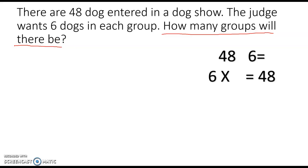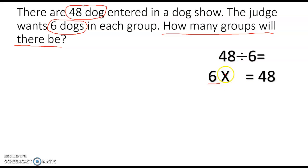What information is going to help us solve this? We know there are 48 dogs and there are six dogs in each group. So we are going to be dividing 48 divided by six — 48 dogs divided into groups of six. If there are six in each group, times however many groups, we will have 48 dogs altogether.